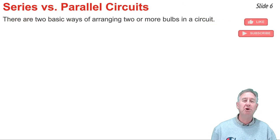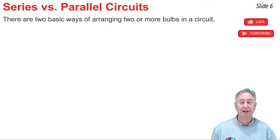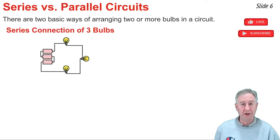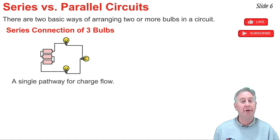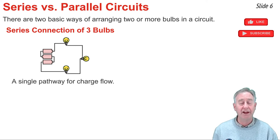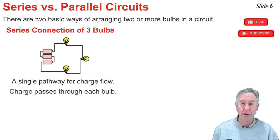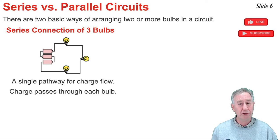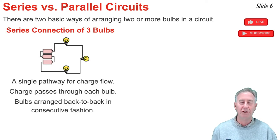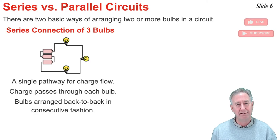As we have seen, there are two basic ways of connecting multiple bulbs in a circuit. First, there's the series circuit, in which there is only one pathway by which charge can make its way around the circuit. Any charge that exits the battery will go through every light bulb before returning to the battery — through the first bulb, then the second, then the third — because in a series circuit the bulbs are arranged in back-to-back consecutive fashion.